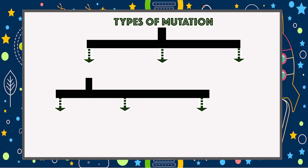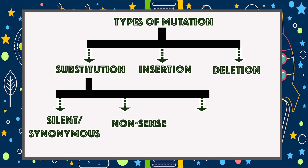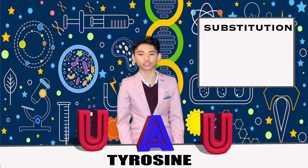There are different types of mutation: substitution, insertion, and deletion. Substitution is divided into silent, nonsense, and missense mutations. Let me show you an example of silent mutation.